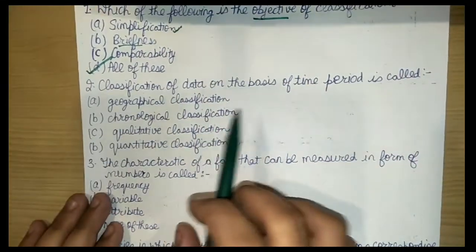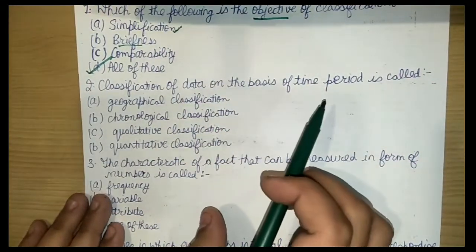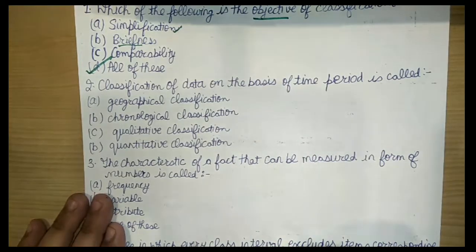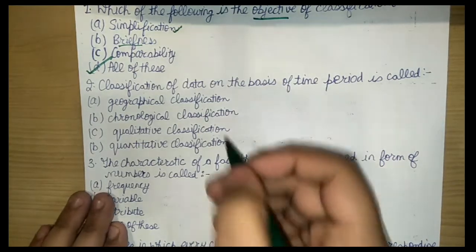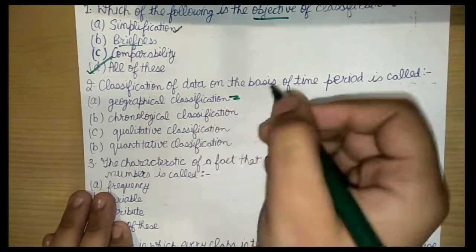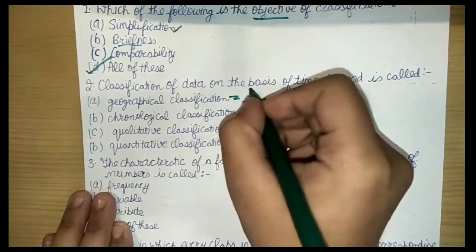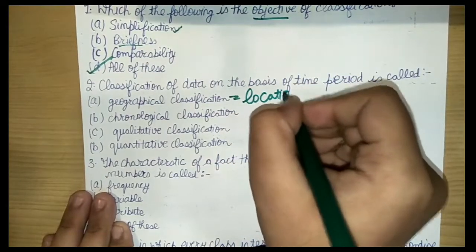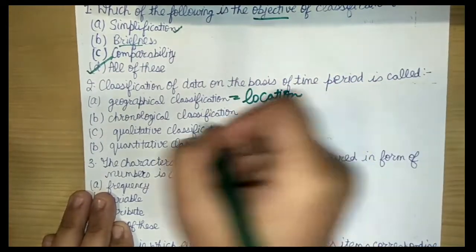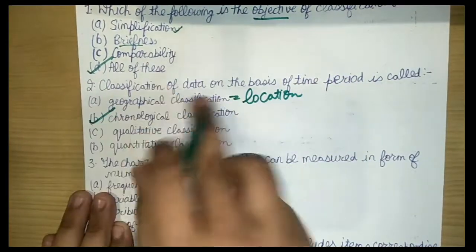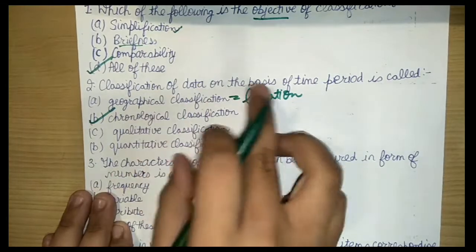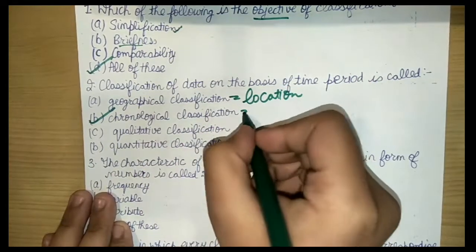The next question is: classification of data on the basis of time period is called what? Geographical classification is based on location. The correct answer here is chronological — chronological classification is the classification of data on the basis of time.